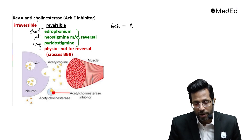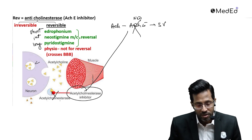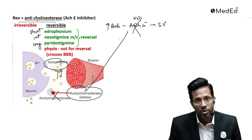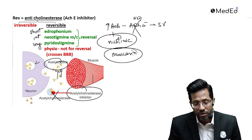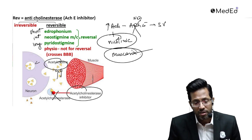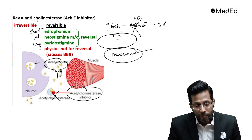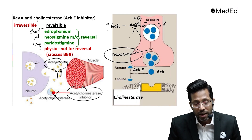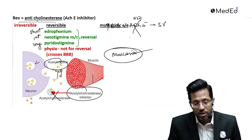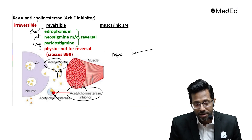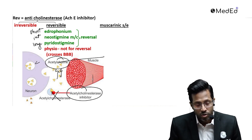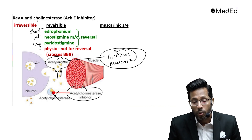When neostigmine is given for reversal, acetylcholine was being destroyed by acetylcholinesterase and going back to the synaptic vesicles. Giving neostigmine stops that enzyme and increases acetylcholine. This increase in acetylcholine occurs everywhere — not just at nicotinic receptors, but also at the muscarinic receptors. Because of this, the patient starts to experience muscarinic side effects.